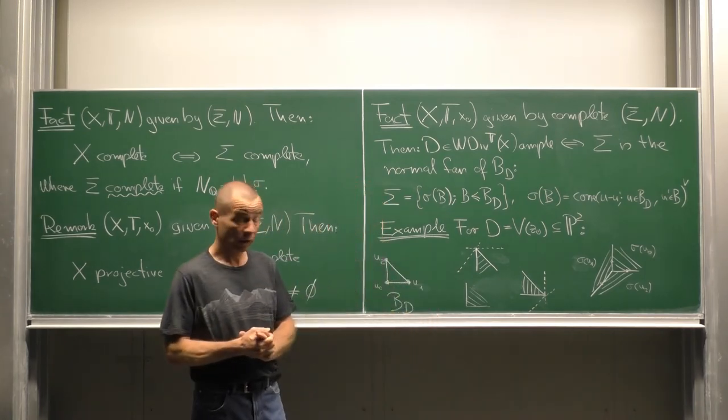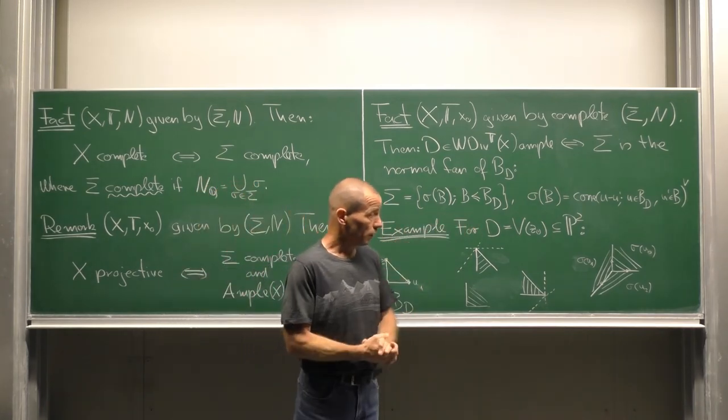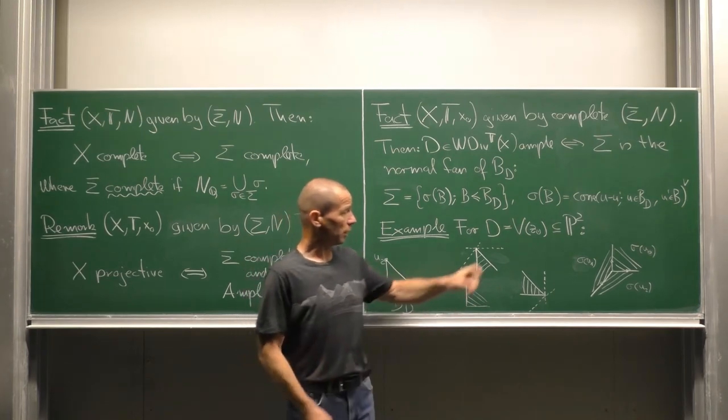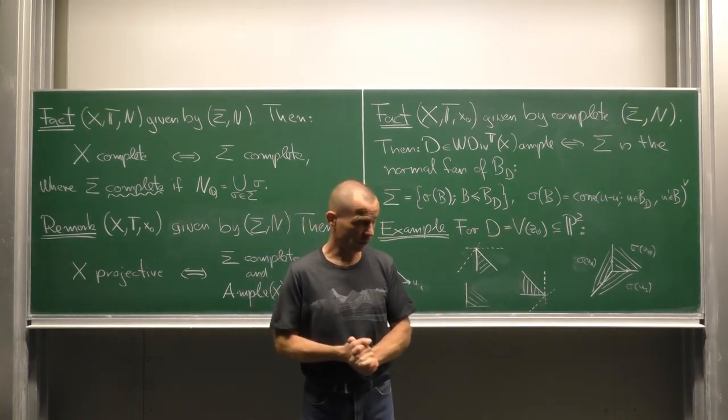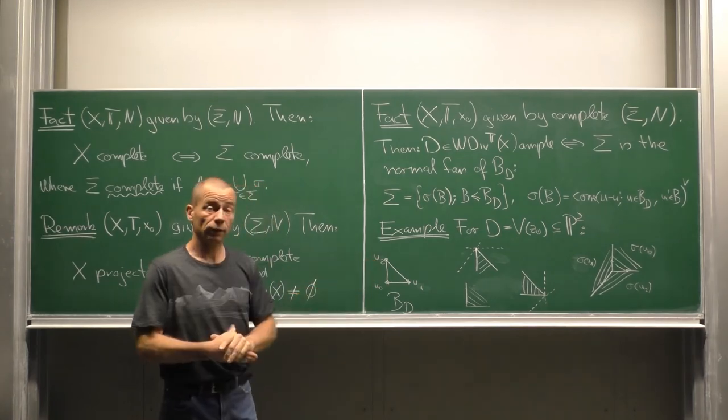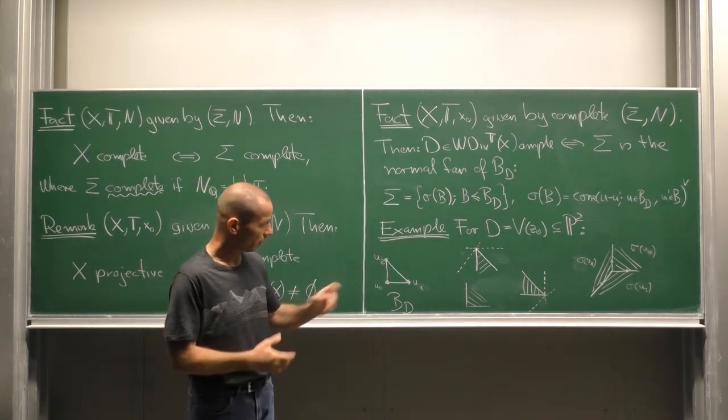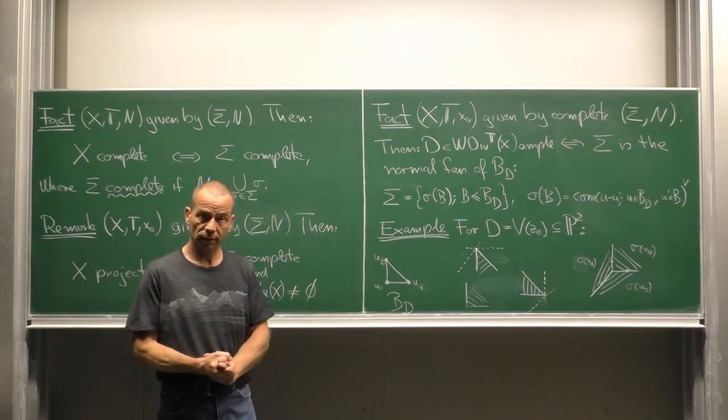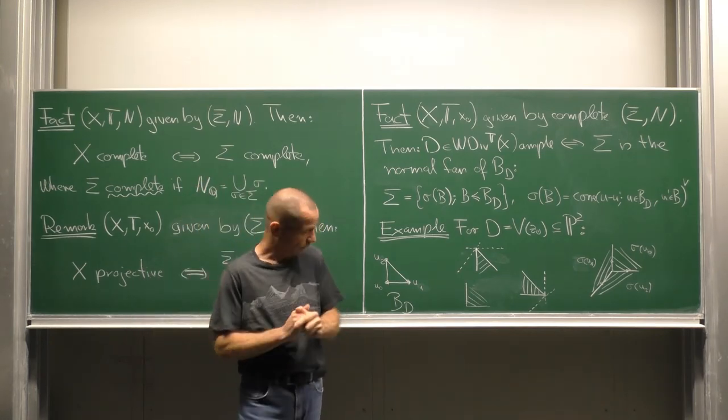Let us see an example. Consider the coordinate line defined by Z0 in the projective plane. We know already that the divisorial polyhedron is the standard simplex. Let us determine the normal fan.